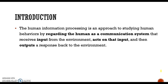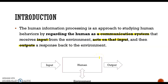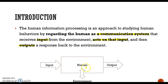The first point I want to cover is what human information processing is. Human information processing is an approach to study human behaviors by regarding humans as a communication system that receives input from the environment, acts on that input, and then provides outputs back to the environment. This figure shows that a human is a box that gets input from the outside environment, provides output back to the environment, and during this process has interactions with the environment. So this procedure is human information processing.